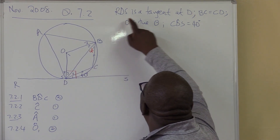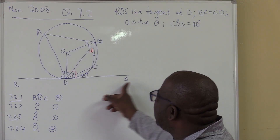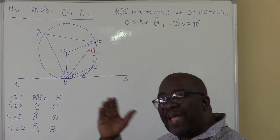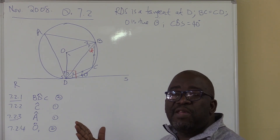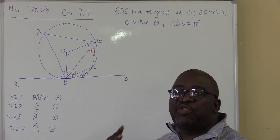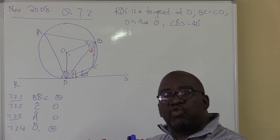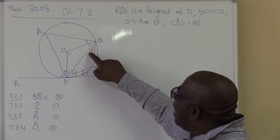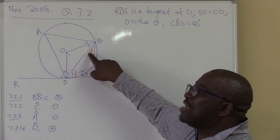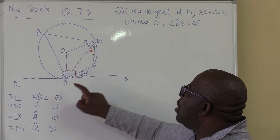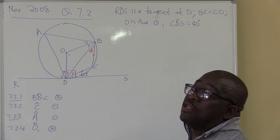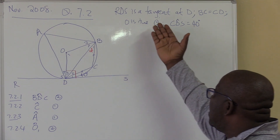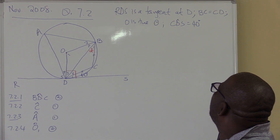We just got that from the statement that this line is a tangent. I looked for three theorems — I only have two here, I don't have two tangents from the same point. So from that information, we were able to find that this angle is 40 degrees and this angle is 90 degrees, just from the fact that RDS is a tangent.